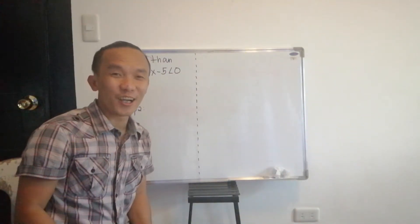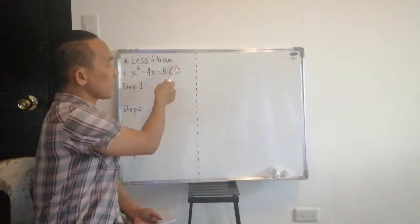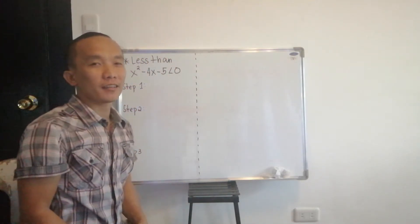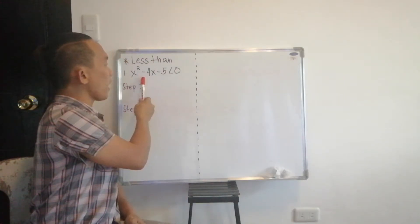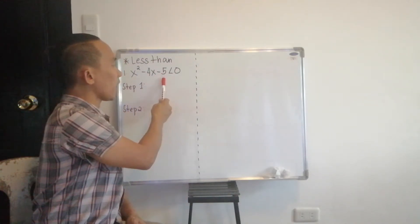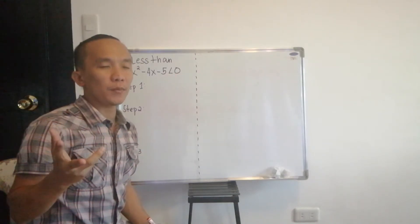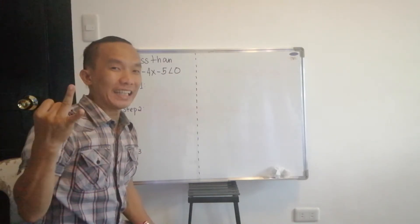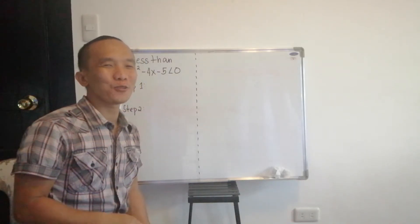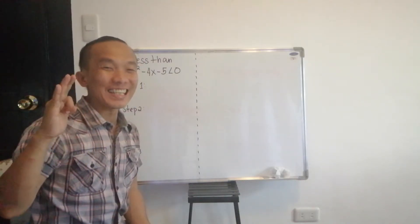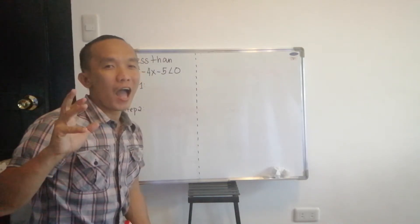Let us start discussing our first example. We have x squared minus four x minus five less than zero. For us to be able to graph, find the interval notation, and find the solution set, there are only three steps to follow, and I will show you how.